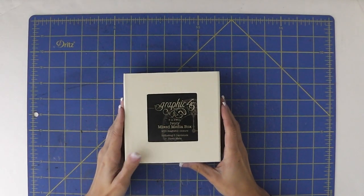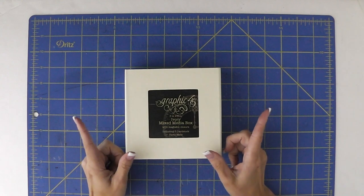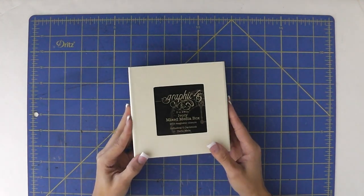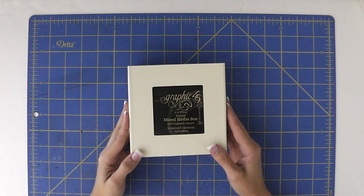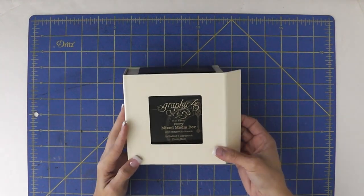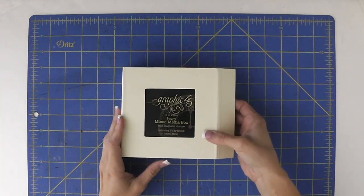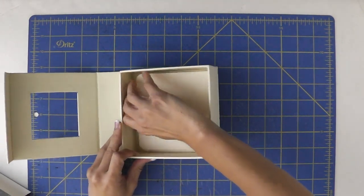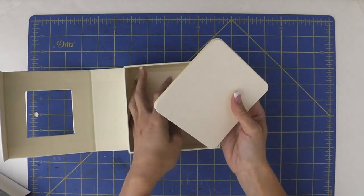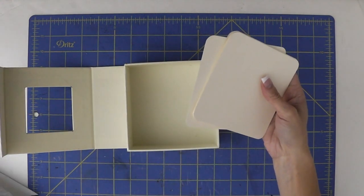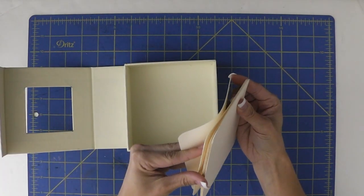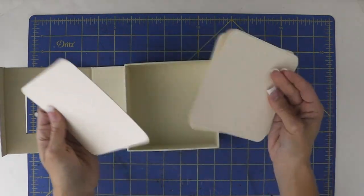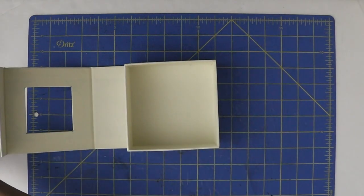To make the mini album, the box mini album, you're going to need a Graphic 45 five by five mixed media box. This one's in ivory. They come in black and craft as well. And it has a nice magnet closure, which is really fun. And then it comes with six tags. And I use these as my pages for the mini album. And I use four for my album. It fits really nicely, especially if you're going to add some embellishments. So I'm going to set the four of these aside for the album.